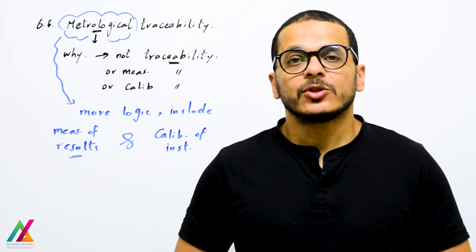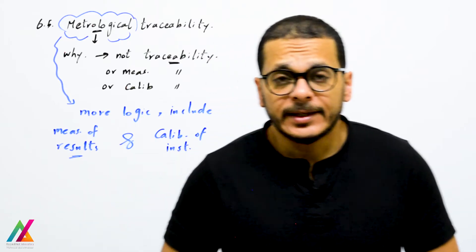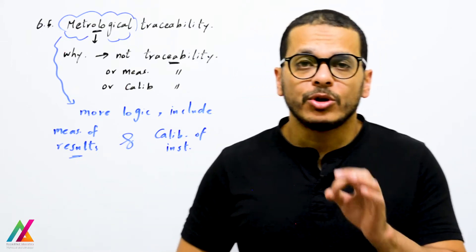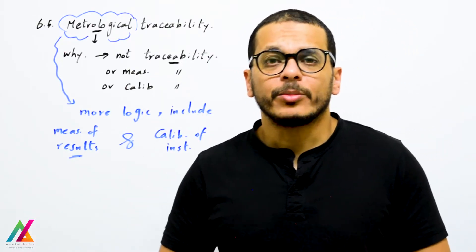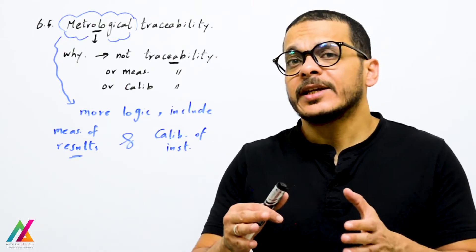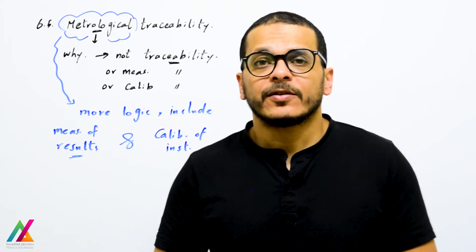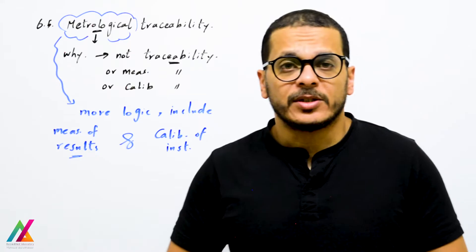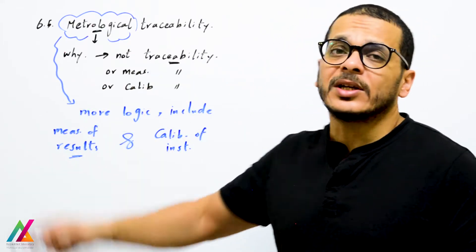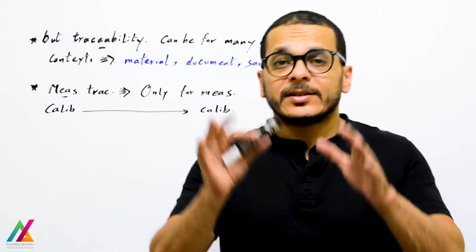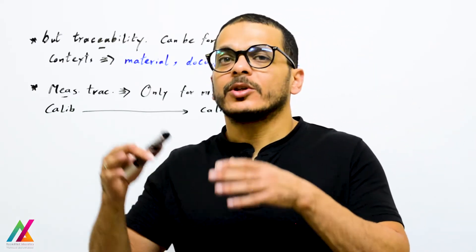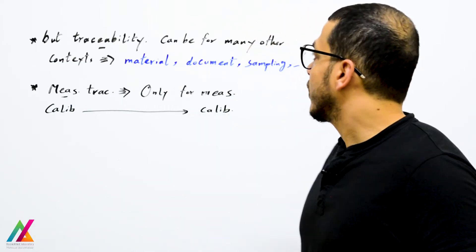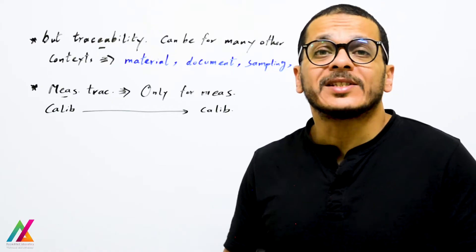Welcome back to a new lecture on ISO IEC 17025 2017 edition, covering metrological traceability. In the 2005 edition it was called 'measurement traceability,' but now it's 'metrological traceability.' Why not just 'traceability,' or 'measurement traceability,' or 'calibration traceability'? Metrological traceability is more logical because it can include both measurement results and calibration of instruments, whereas plain 'traceability' is a common name that can also apply to many other contexts such as material, document, sampling, and others.